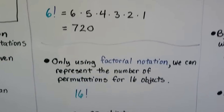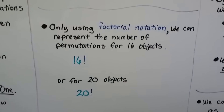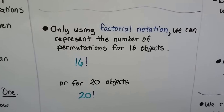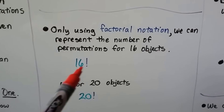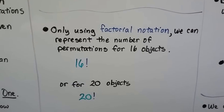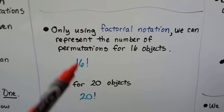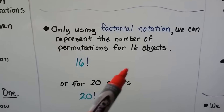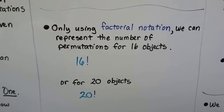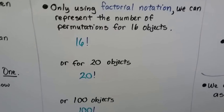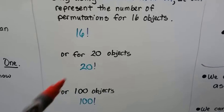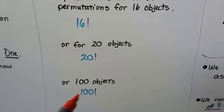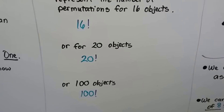Using only factorial notation, we can represent the number of permutations for 16 objects. We just write 16 with an exclamation point for 16 factorial. That would be 16 times 15 times 14 times 13, and so on, all the way down to 1. Or for 20 objects we'd have 20 factorial, or even for 100 objects, that would be 100 factorial.